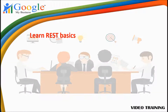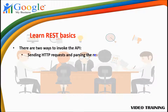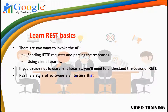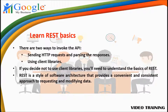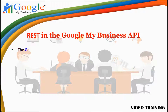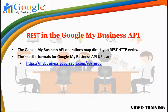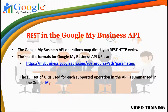There are two ways to invoke the API: sending HTTP requests and passing the responses, or using client libraries. If you decide not to use client libraries, you'll need to understand the basics of REST. REST is a style of software architecture that provides a convenient and consistent approach to requesting and modifying data. Google My Business API operations map directly to REST HTTP verbs. The specific formats for Google My Business API URLs are summarized in the Google My Business API reference document on the website.